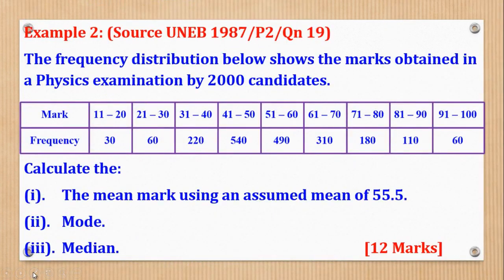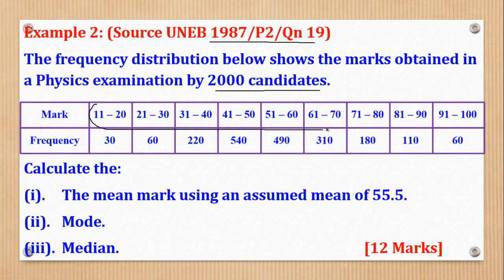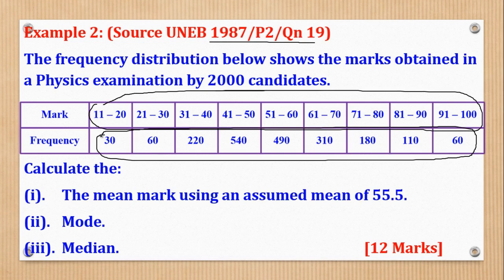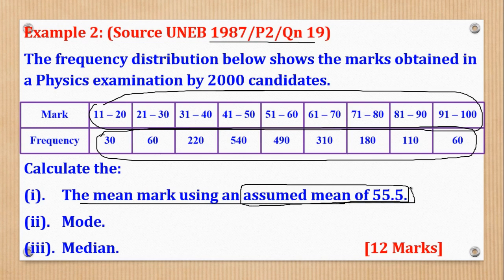Now we shall go to Example 2. Example 2 was from UNEB 1987, Paper 2, Question 9. It says: the frequency distribution below shows the marks obtained in a physics examination by 2000 candidates. They ask us to calculate: (i) mean mark using assumed mean of 55.5, (ii) the mode, and (iii) the median.